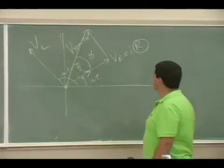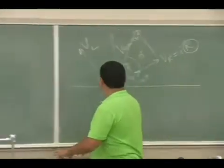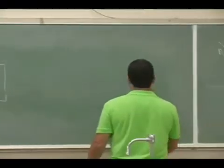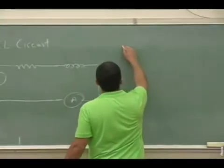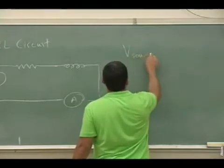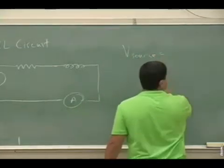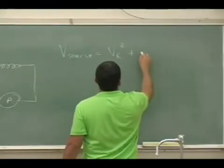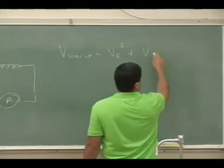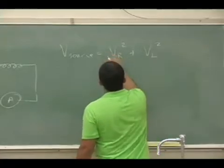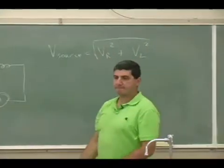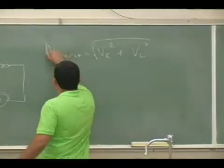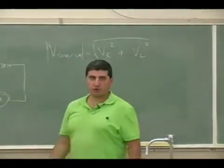Okay, so I'm going to say my voltage of the resistor, voltage of the source is going to equal voltage of the resistor squared plus voltage of the inductor squared, square root. Right? This is the magnitude. Magnitude of the voltage of the source.